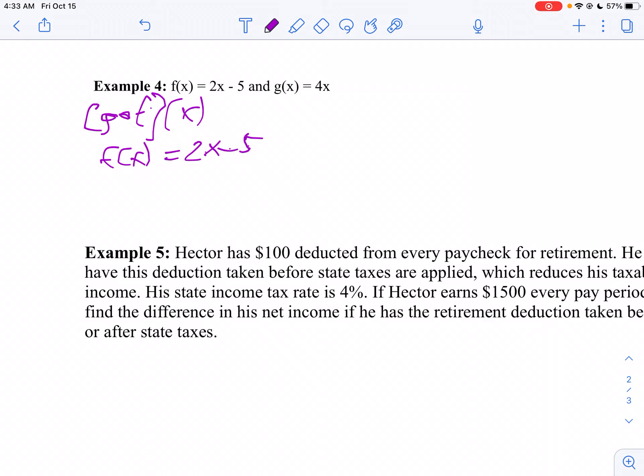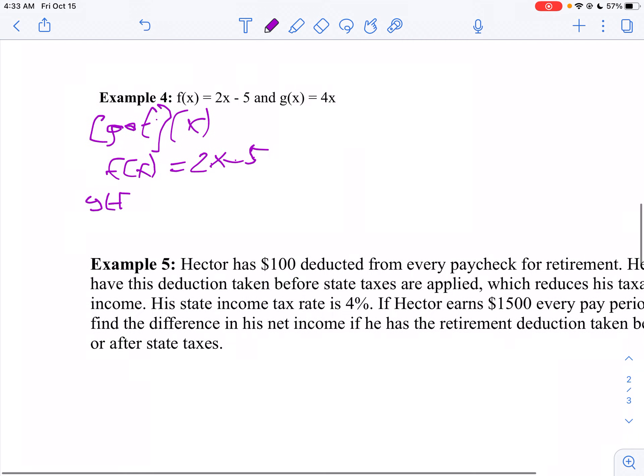Now, what I'm going to do is I want to find g of f of x. So instead of writing x, I'm going to write f of x. So I'm going to say 4 times f of x. But f of x is 2x minus 5, so I'm going to say 4 times 2x minus 5.